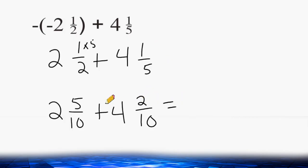Now we can just add the whole numbers together. 2 and 4 is 6, and the denominator stays the same. We can add the numerators of 5 and 2, and that gives us 7. So the answer in this case is 6 and 7 tenths.